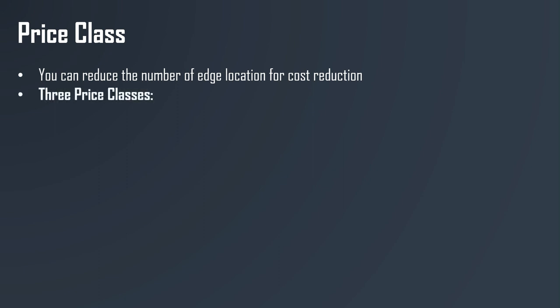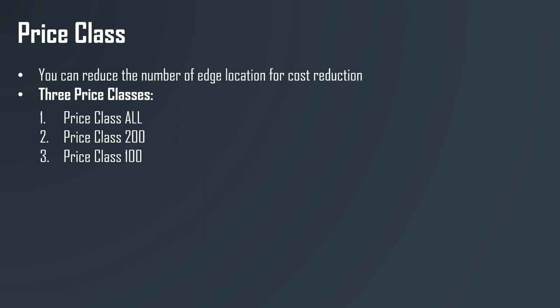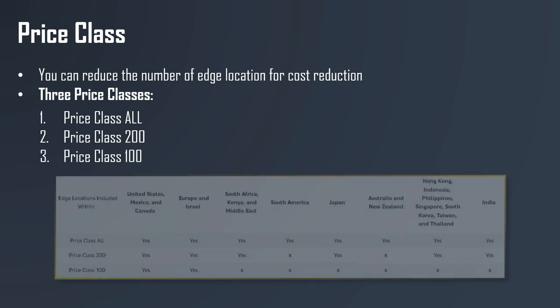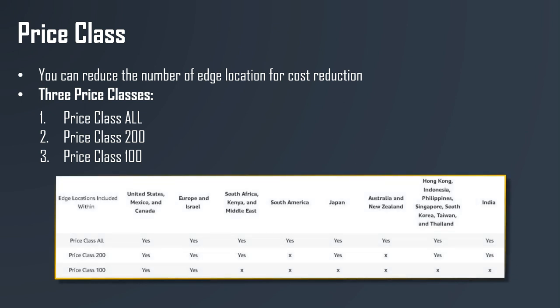There are three price classes available. Price Class All gives you all regions and the best performance, but costs more — for example, an edge location in India costs more than one in the United States. Price Class 200 gives you most regions but excludes the most expensive ones. Price Class 100 gives you only the least expensive regions. This is summarized in the pricing table.